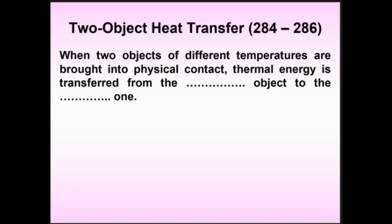We'll always assume the two objects are in contact — conducting. Thermal energy is always transferred from the warmer object to the cooler one. Why wouldn't it go from cold to warm? Because that would take the system further from balance, and the particle vibration argument also doesn't support it.